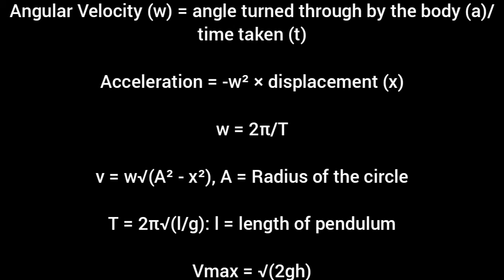Seven is simple harmonic motion. This topic has lots of formulas, but while solving past questions I found the following indispensable: angular velocity equals angle turned through over time taken; linear acceleration equals the square of angular speed times displacement; period equals 2π over angular velocity; linear velocity equals angular velocity times the square root of a² minus x²; period equals 2π times the square root of l over g; maximum velocity equals the square root of 2gh. Mere knowledge of these formulas is not enough — the right application is the key to finding correct answers.